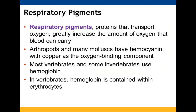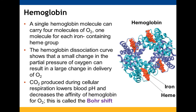There are respiratory pigments — different proteins that help increase how much oxygen our blood carries. We use hemoglobin; arthropods and mollusks use hemocyanin, which has copper to bind oxygen. Our hemoglobin is found in erythrocytes — our red blood cells. Each hemoglobin can hold up to four oxygen molecules. A hemoglobin association curve shows that a slight change in partial pressure of oxygen can have a significant change in how much oxygen is released. Carbon dioxide produced during cellular respiration is acidic and reduces pH, which also decreases hemoglobin's affinity for oxygen. This is commonly called the Bohr shift.